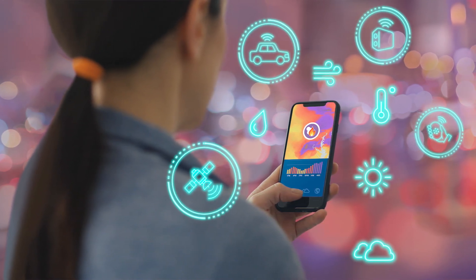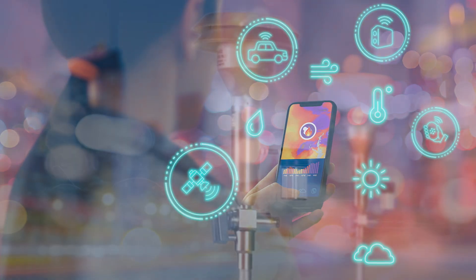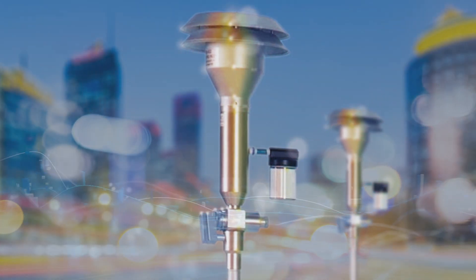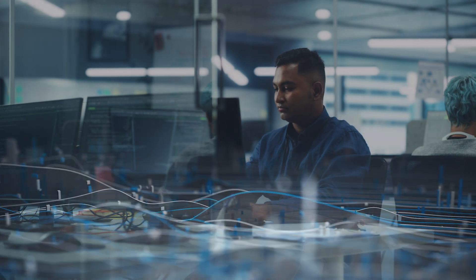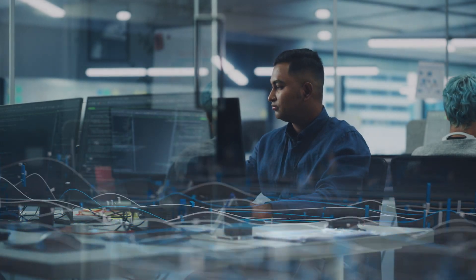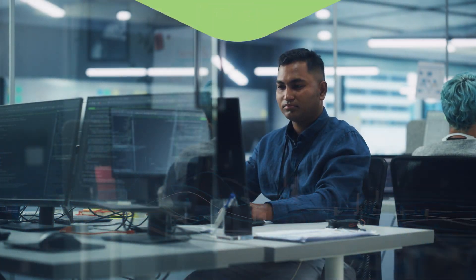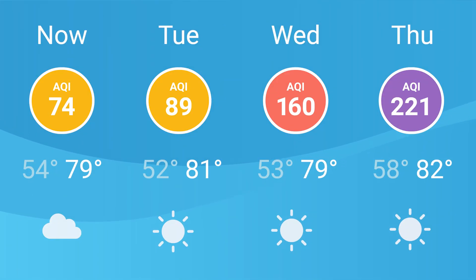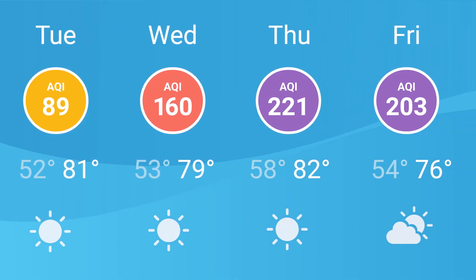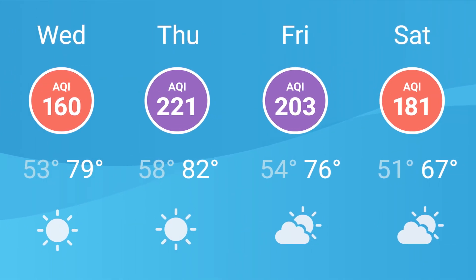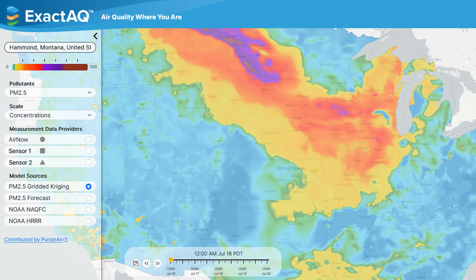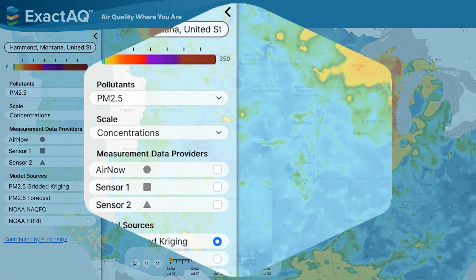ExactAQ uses advanced models to combine observations from thousands of air quality monitors with weather and chemical forecasting models to provide the most reliable air quality information available. Use the API to add ExactAQ forecasts, maps, and dashboards to your website or app.